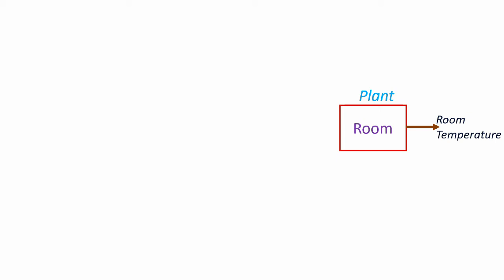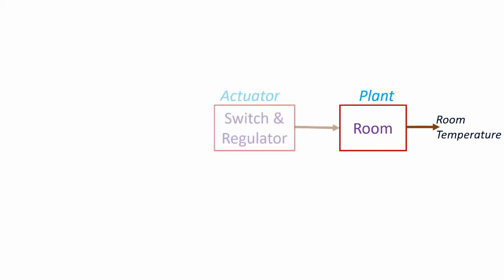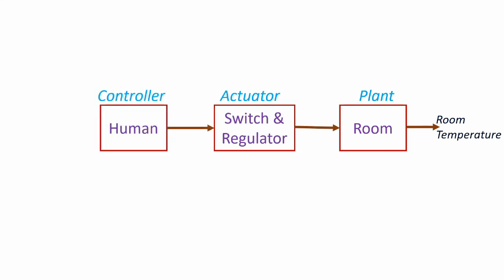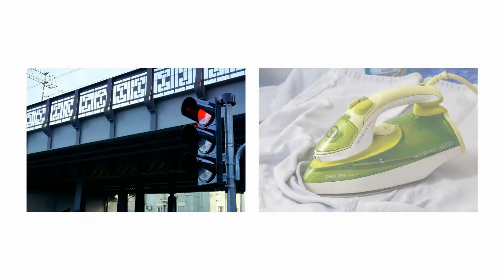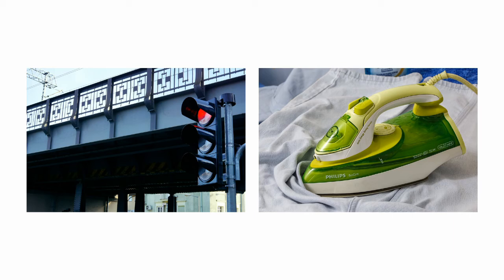Here also, the plant is the room and the variable that needs to be controlled is temperature. This is done with the help of a switch and regulator, which in turn is controlled by a human being. Some other examples of open loop systems are traffic lights and an iron box. In the case of a traffic light, there is no active feedback of the present traffic conditions — the control signals are simply pre-programmed. Similarly, in the case of an iron box, there is no automatic temperature control; we are just manually using the iron box.